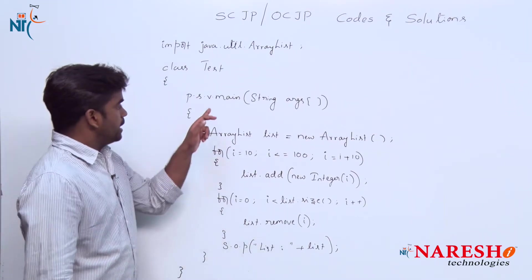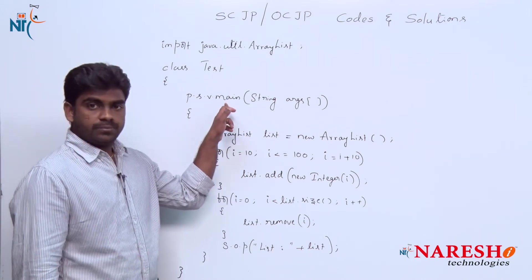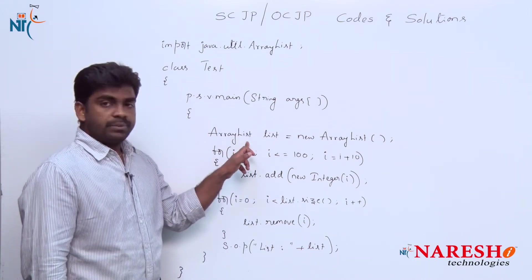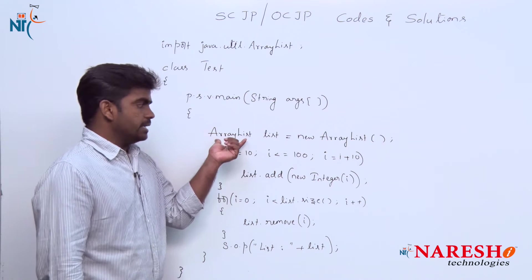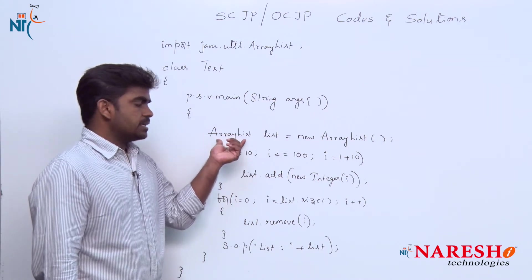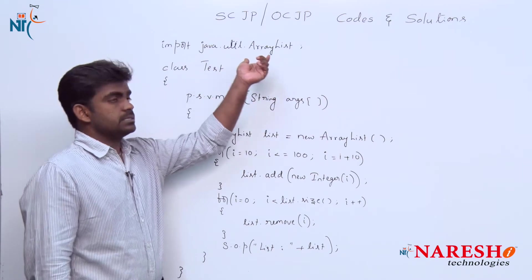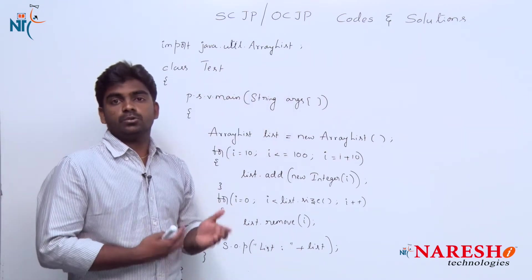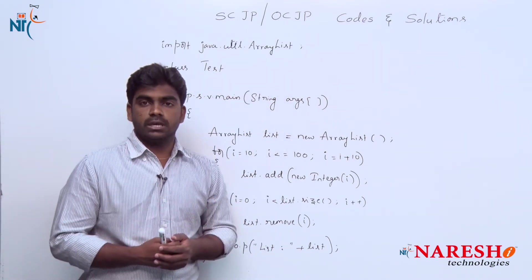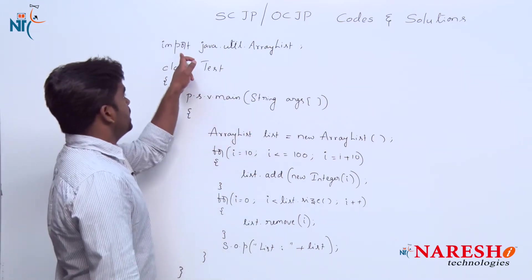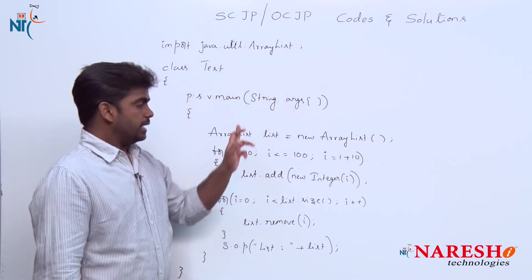First, execution starts from the main method. In the first statement we have created an object for ArrayList. The ArrayList class is available in the util package. Util package classes are not available directly into Java application, so we are using import statement. With the help of import statement, we imported that ArrayList.